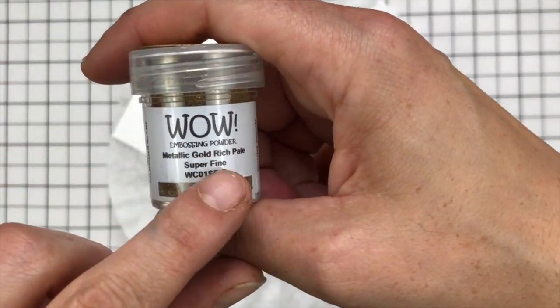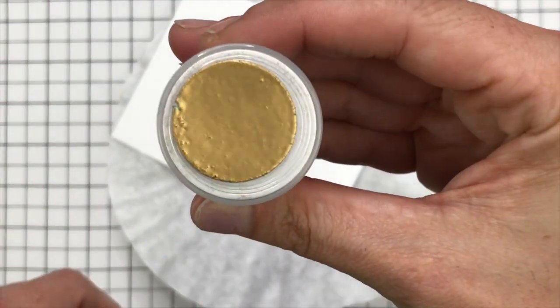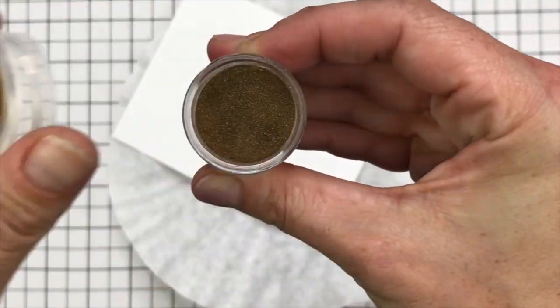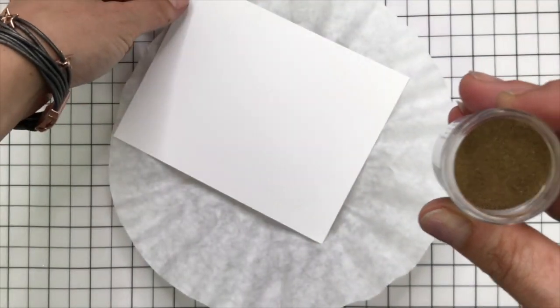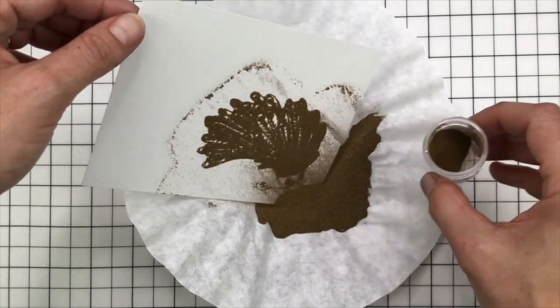I'm using WOW Metallic Gold Rich Pale Superfine because this is a very intricate stamp. And I'm going to shake the embossing powder all over my cardstock and you will see there's a couple of areas where it didn't quite stick.